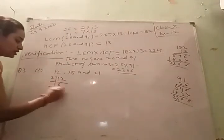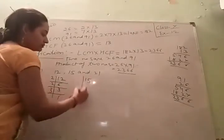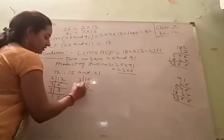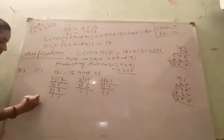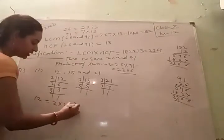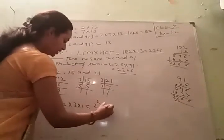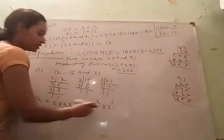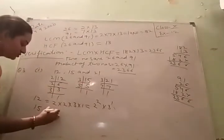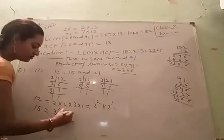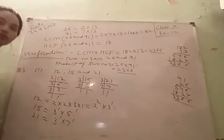Prime factorization by dividing: 12 = 2 × 2 × 3 = 2² × 3. 15: divide by 3, then 5. So 15 = 3 × 5. 21: divide by 3, then 7. So 21 = 3 × 7. For 12, the factor 2 appears 2 times: 2² × 3. For 15, factor 3 appears once and 5 once. For 21, factor 3 appears once and 7 appears once.